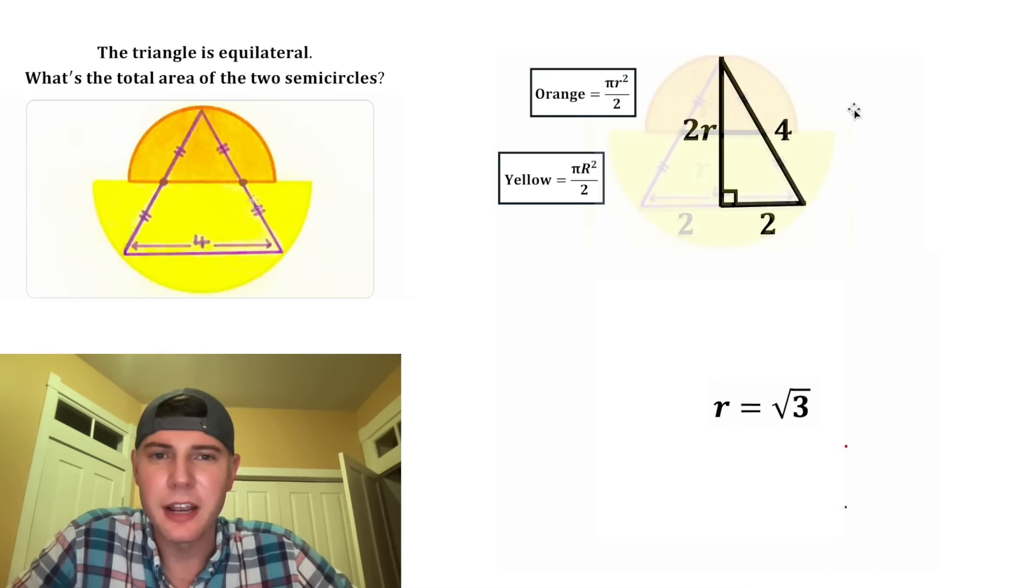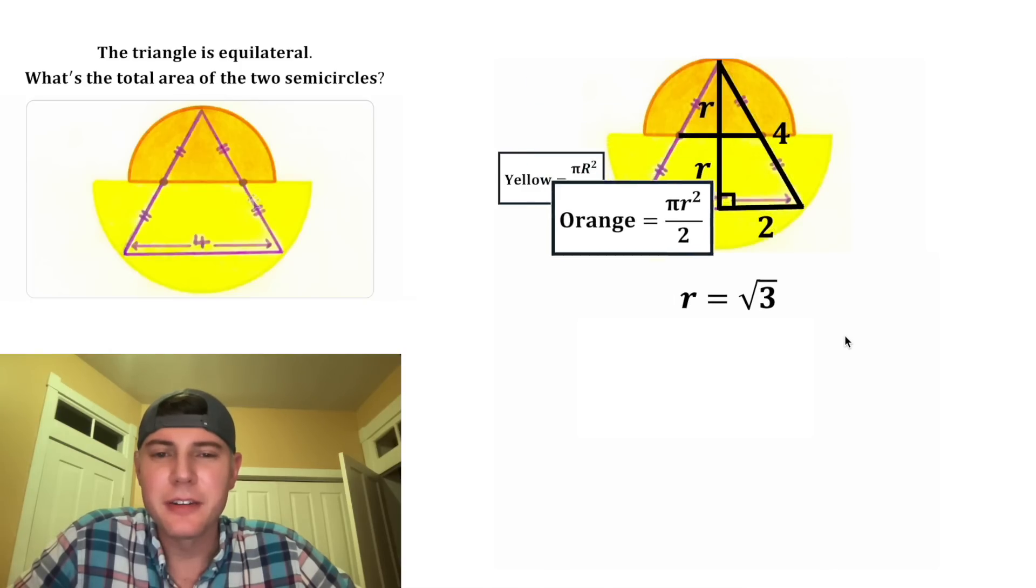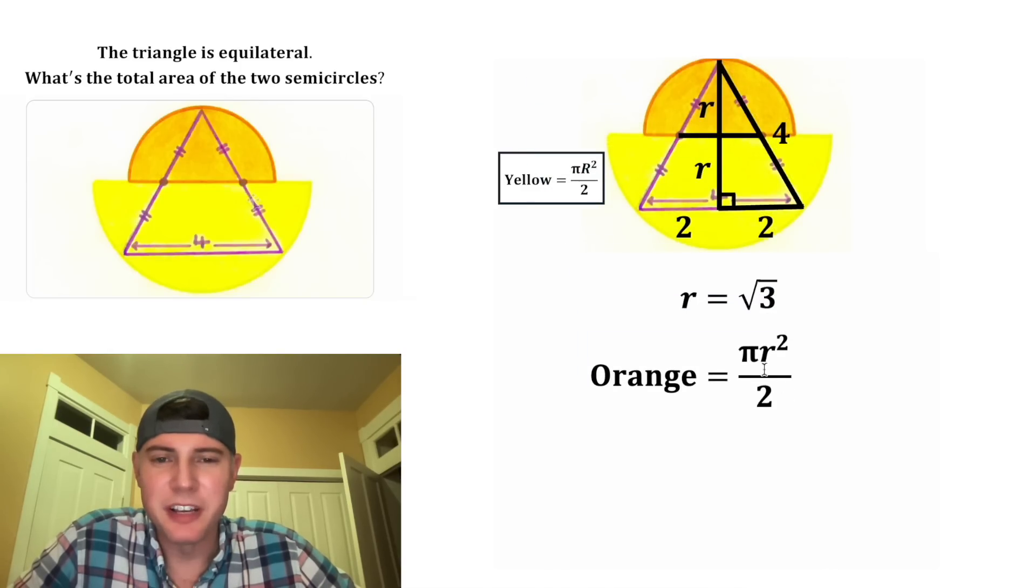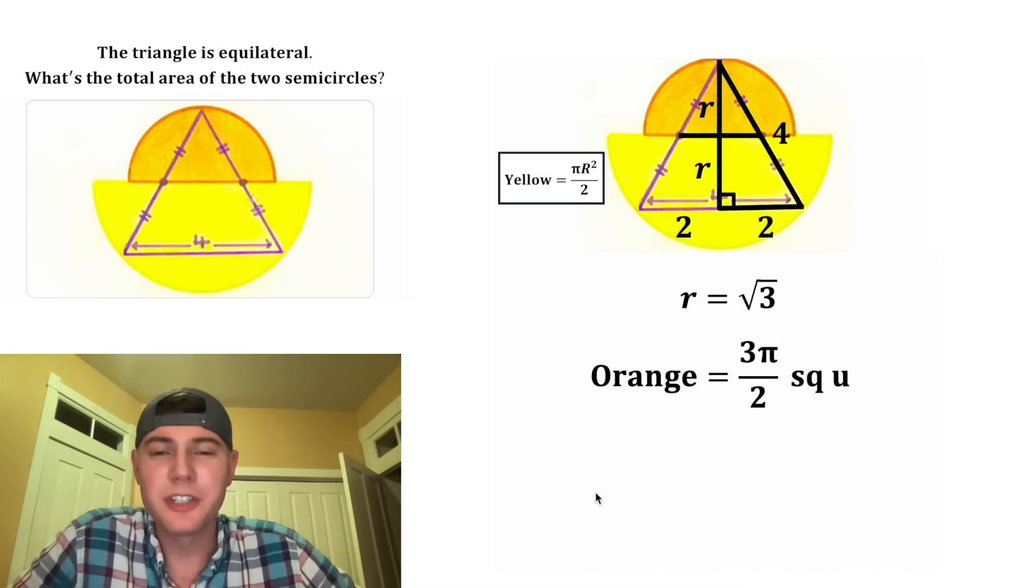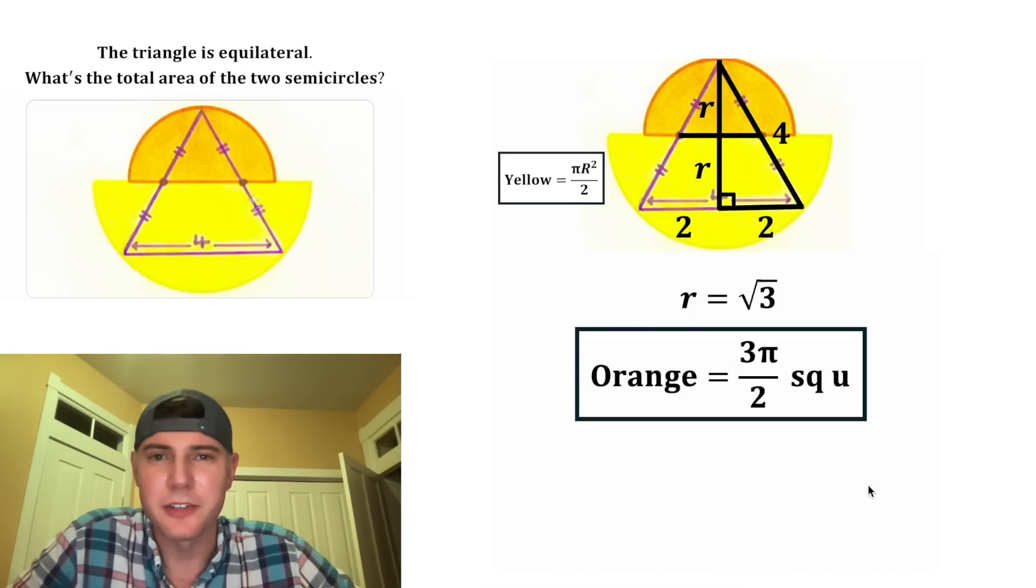We don't need this stuff anymore. Now we're ready to find the orange area. In place of little r, we can plug in square root of 3. The square root and the square are inverse operations, they cancel out. The orange area equals 3π/2 square units. This is most definitely important, let's put a box around it.